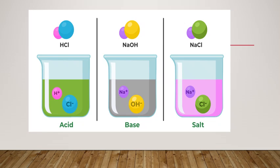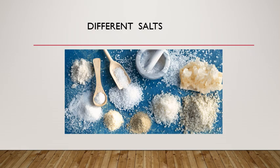In a base, sodium hydroxide, when it is dissolved in water, it undergoes ionization to form Na+ and OH−. So OH− is the base negatively charged ion. Next, NaCl, which is sodium chloride — when it is dissolved in water, a similar ionization reaction takes place liberating Na+ sodium ion and Cl− chloride ion.